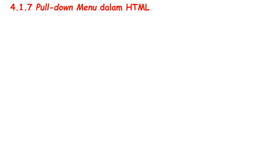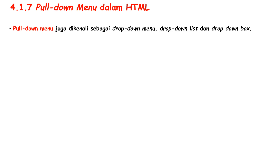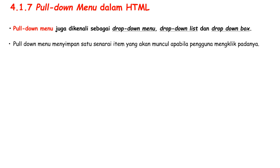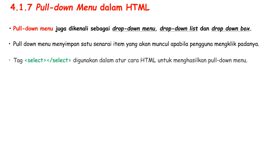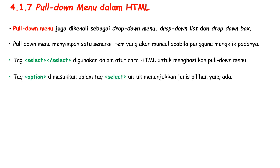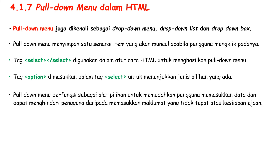Next, let us learn about the pull-down menu. Pull-down menus are also known as drop-down menu, drop-down list, and drop-down box. The pull-down menu stores a list of items that will appear when the user clicks on it. The select tag is used in HTML to generate a pull-down menu. The option tag is inserted in the select tag to indicate the types of options available. Pull-down menus make it easier for users to enter data and can prevent users from entering inaccurate information or spelling mistakes.